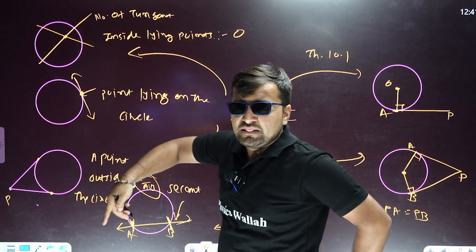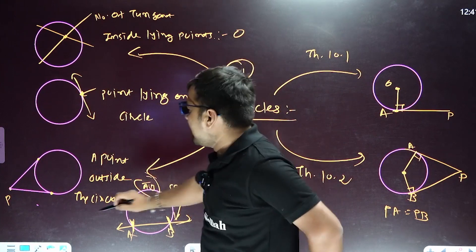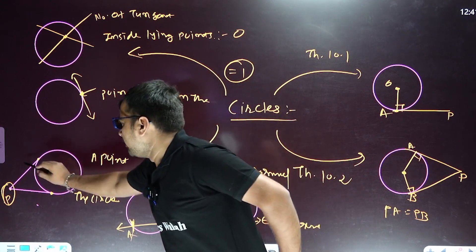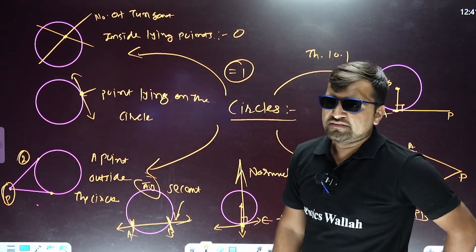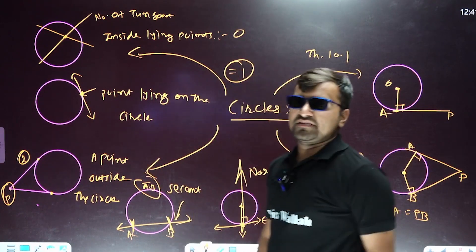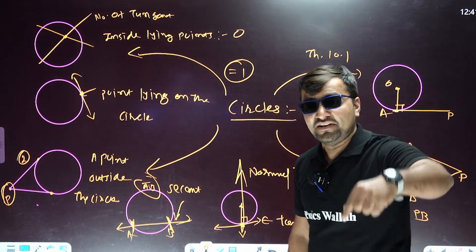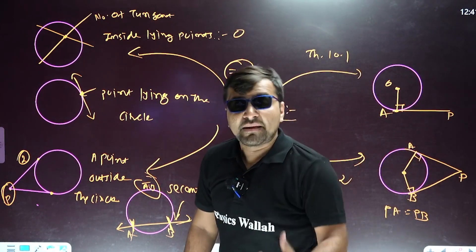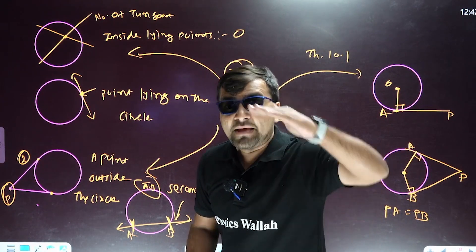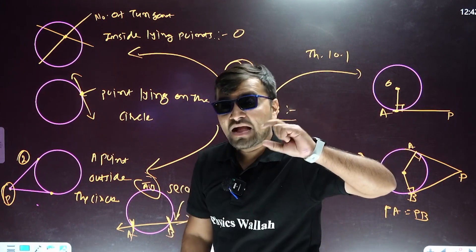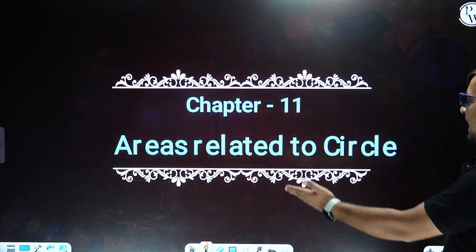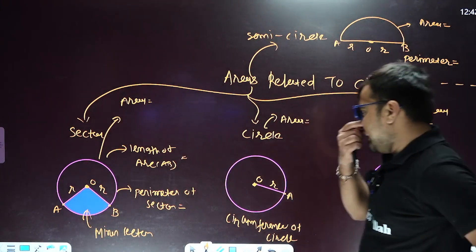If any point is inside the circle, the number of tangents is zero. If a point is lying on the circle, the number of tangents is one. If a point is at an external point outside the circle, you can draw a maximum of two tangents. Write down in the comment section: in a circle, what is the total maximum number of tangents we can draw?